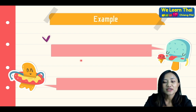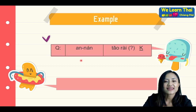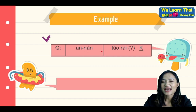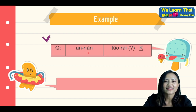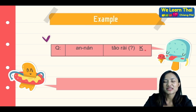So now we will look at this sentence. อันนั้นเท่าไรค่ะ — อันนั้น means 'that one,' เท่าไรค่ะ means 'how much?' So all together: 'How much is that one?'